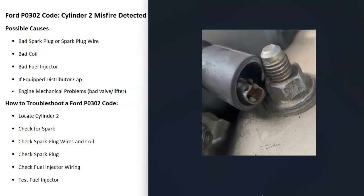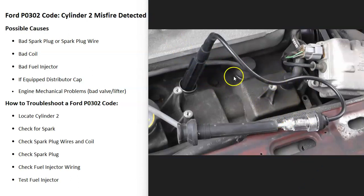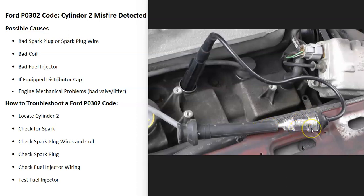There are a few ways to check for spark. Some people hold the spark plug wire close to metal and see if the spark jumps. The method I like to use is a low-cost inline spark tester — less than $10, and I'll put a link below if you need one. One side goes on the spark plug and the other side goes to the coil. You start the engine, and if you're getting spark, you'll see it inside the tester.